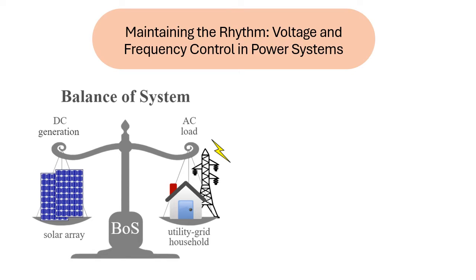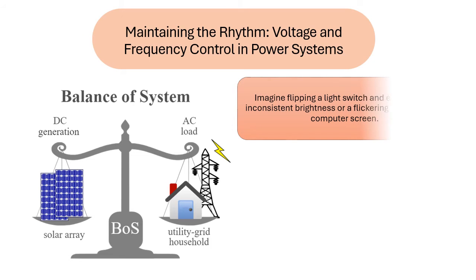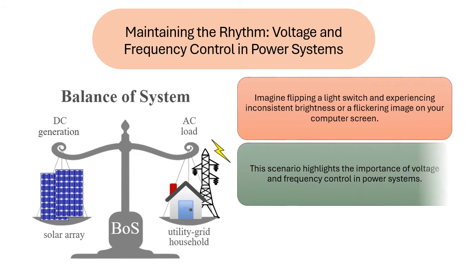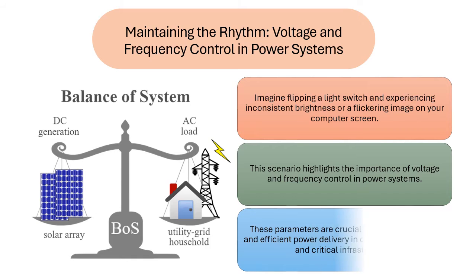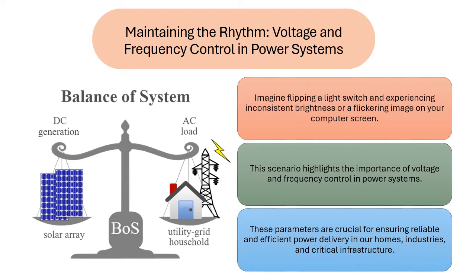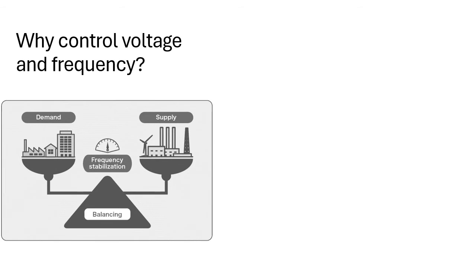Voltage and frequency control in power systems. Imagine flipping a light switch and experiencing inconsistent brightness, or a flickering image on your computer screen. This scenario highlights the importance of voltage and frequency control in power systems. These parameters are crucial for ensuring reliable and efficient power delivery in our homes, industries, and critical infrastructure.